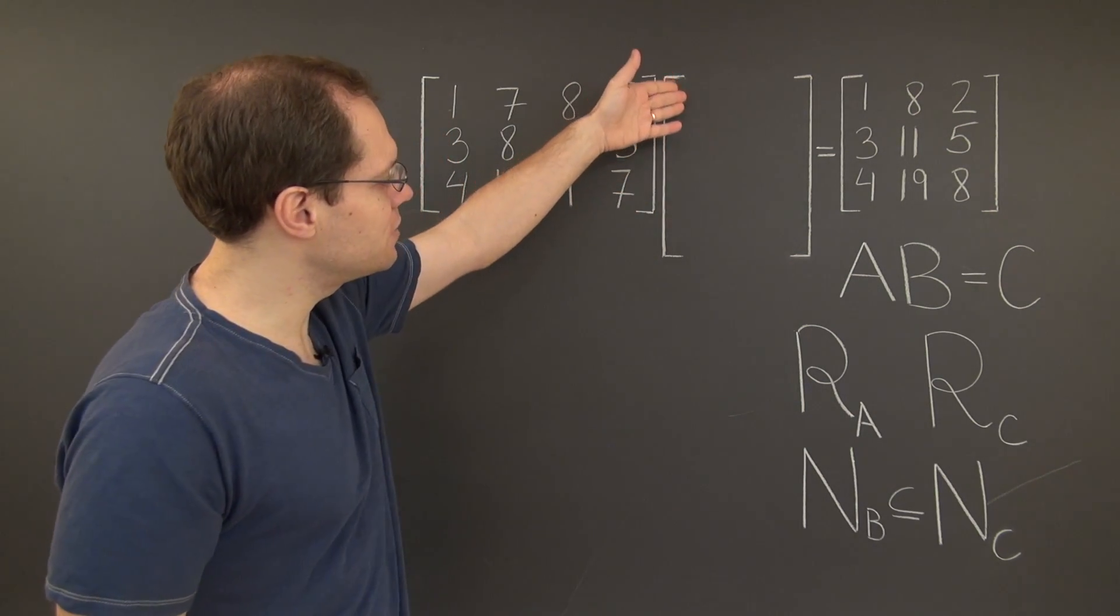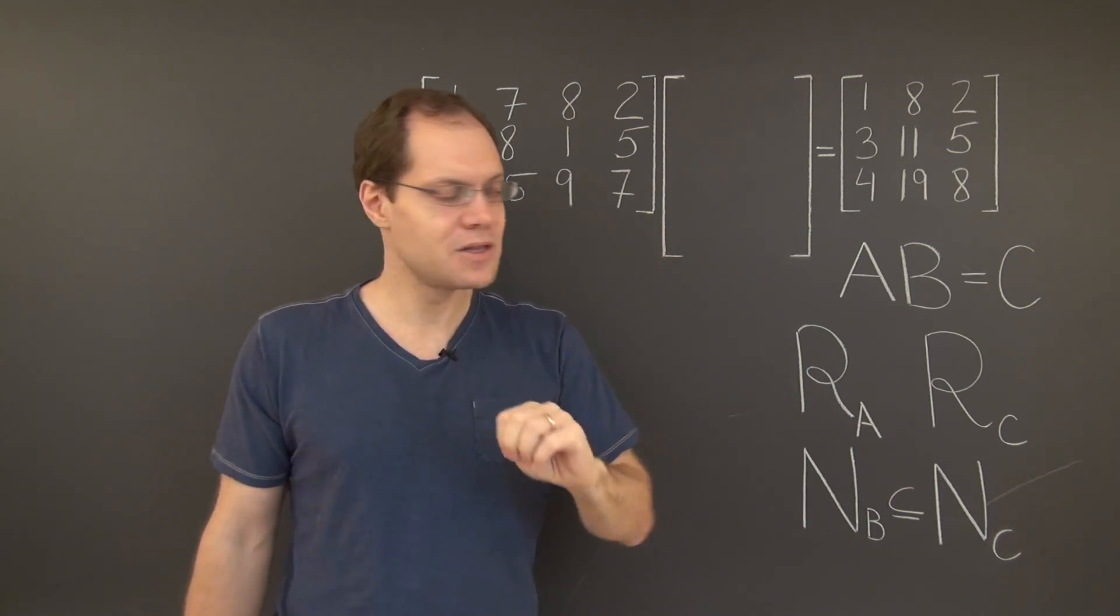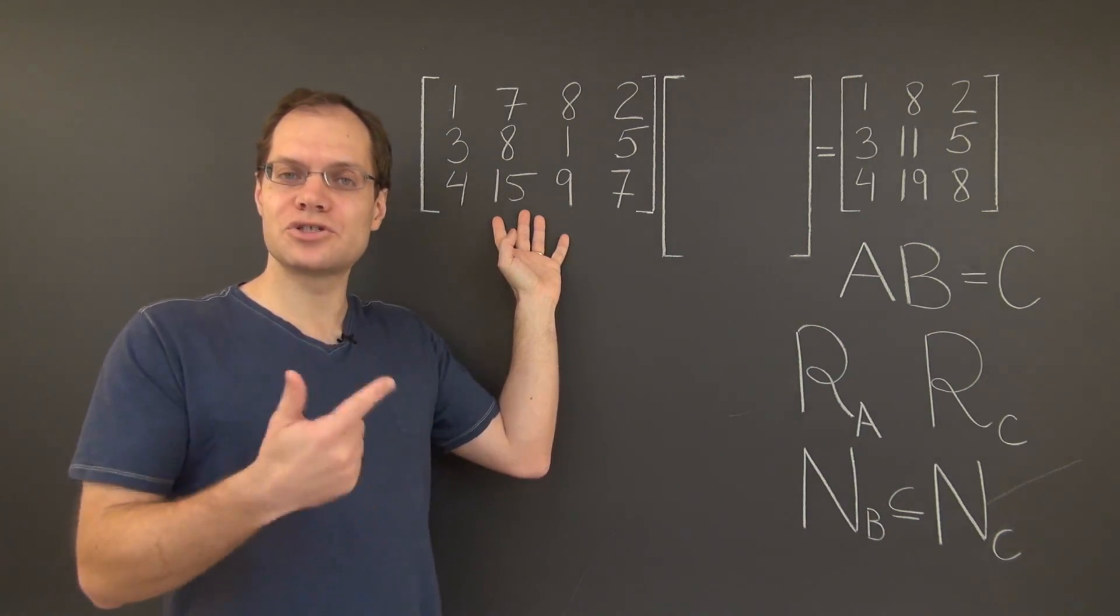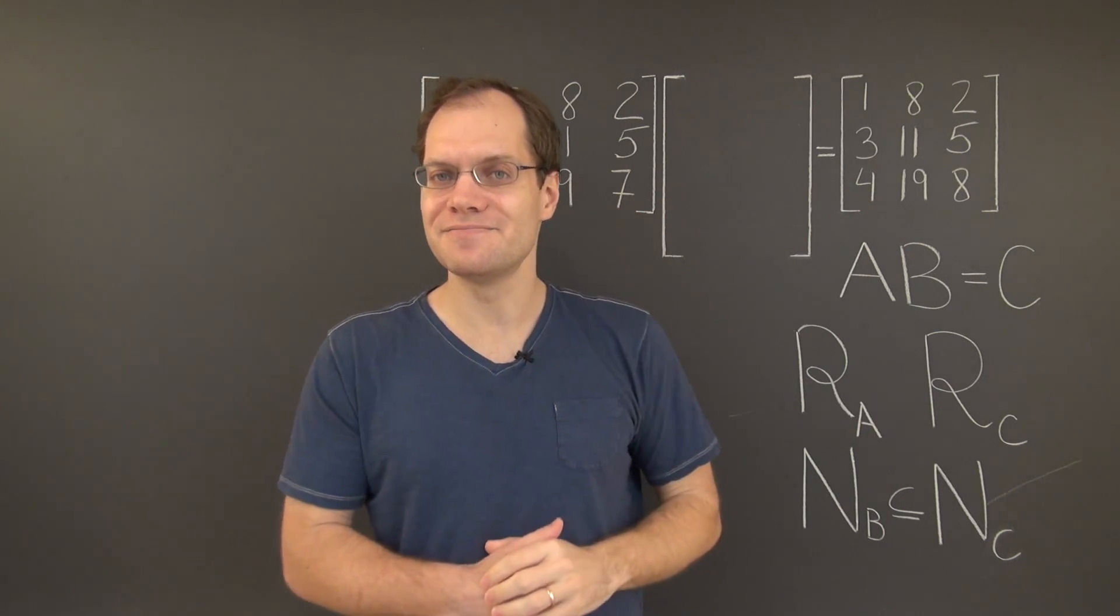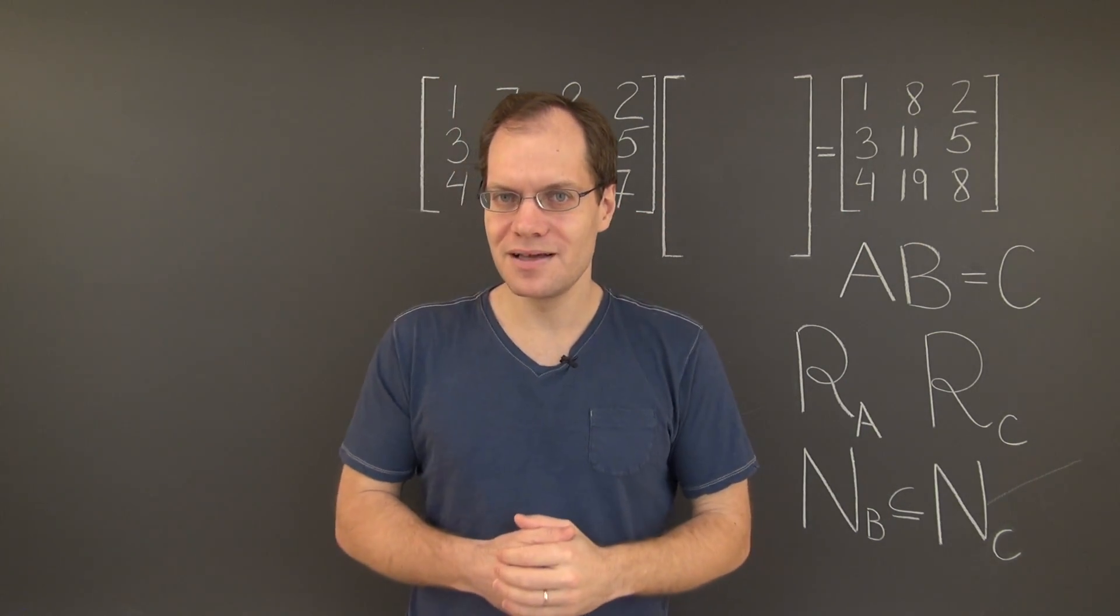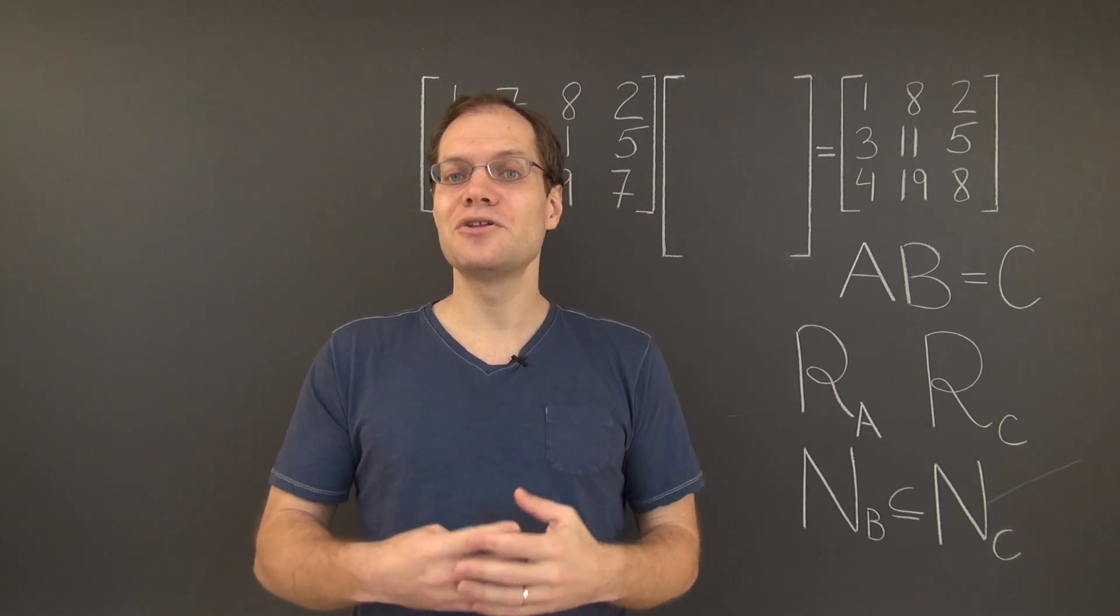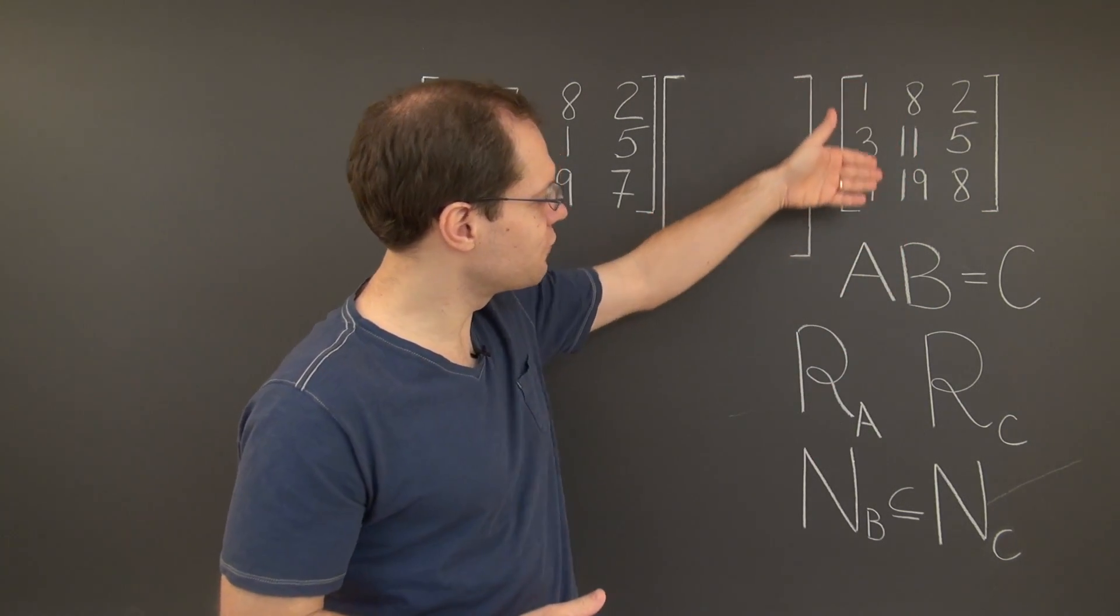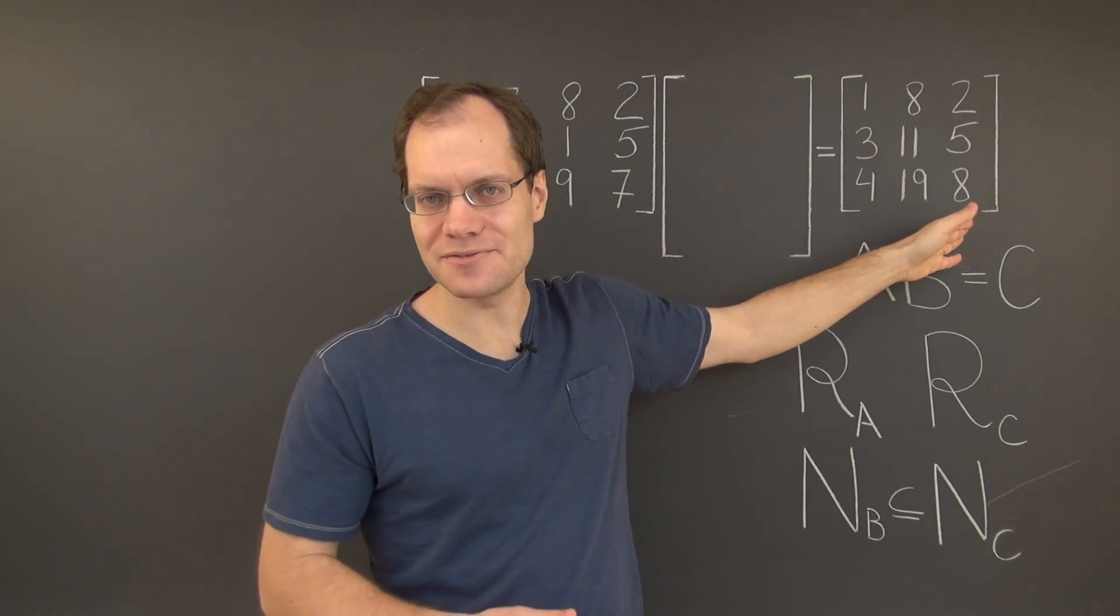So in order to come up with the first column of the matrix B, we need to come up with four coefficients, so that the linear combination of the columns of A with those coefficients results in the first column of C. So what we're looking at is a simple decomposition problem, and we've done many decomposition problems like this in the past. In fact, we're looking at three separate decomposition problems. One for the first column of C, one for the second column of C, and one for the last column of C.